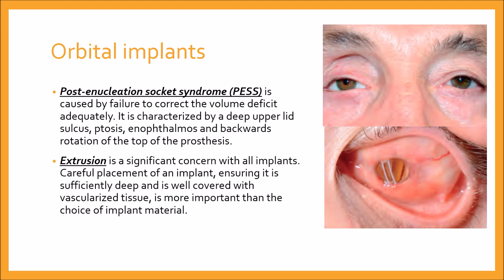Post-enucleation socket syndrome, or PES, is caused by failure to correct the volume deficit — as you can see in the picture, there is a clear volume deficit visible in the right eye. It is characterized by deep upper lid sulcus, which is very prominent in this picture, ptosis, enophthalmos, and backward rotation of the top of the prosthesis.